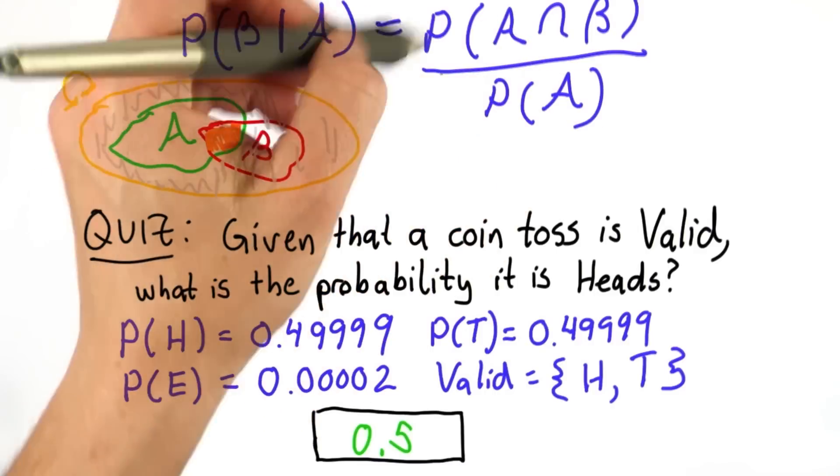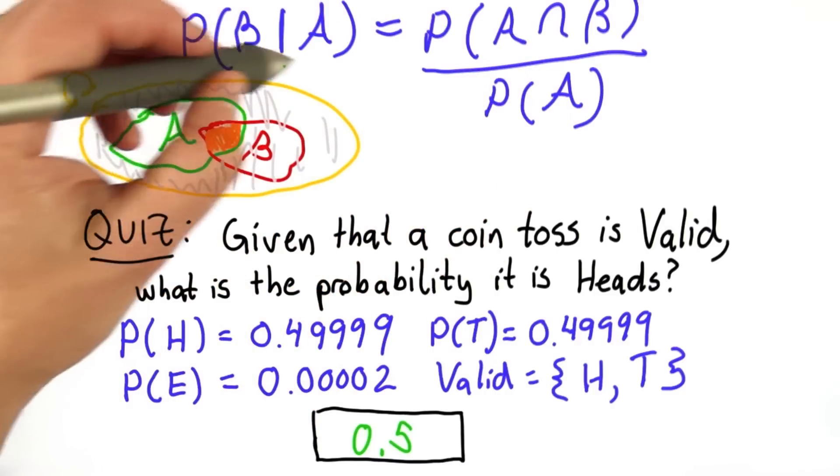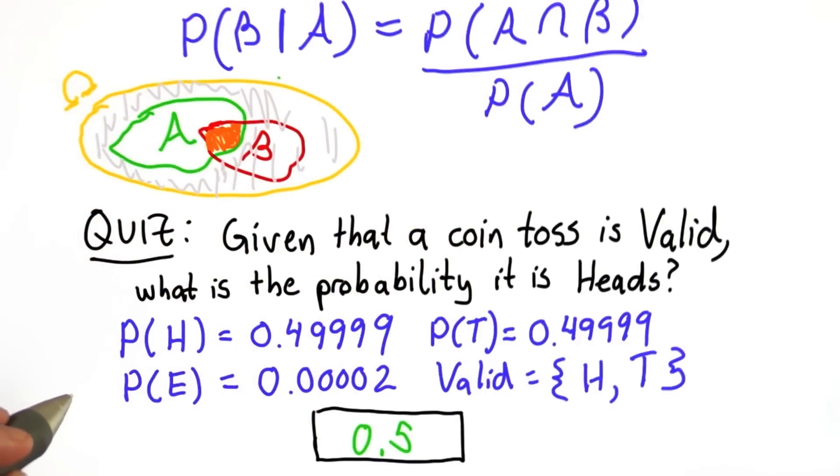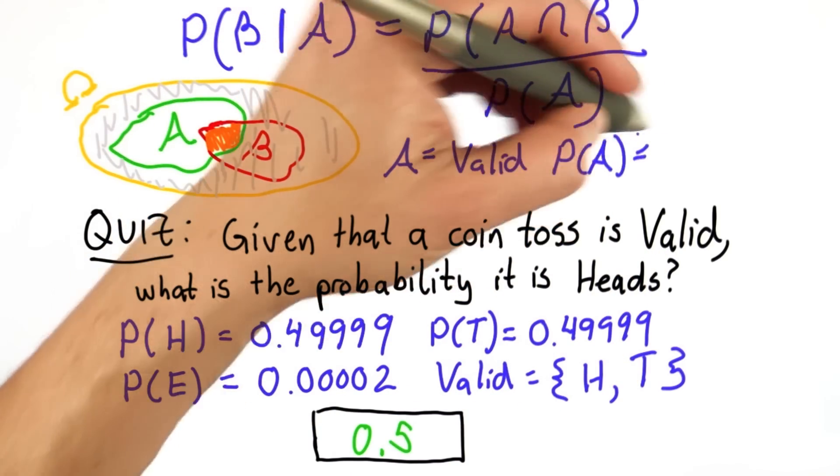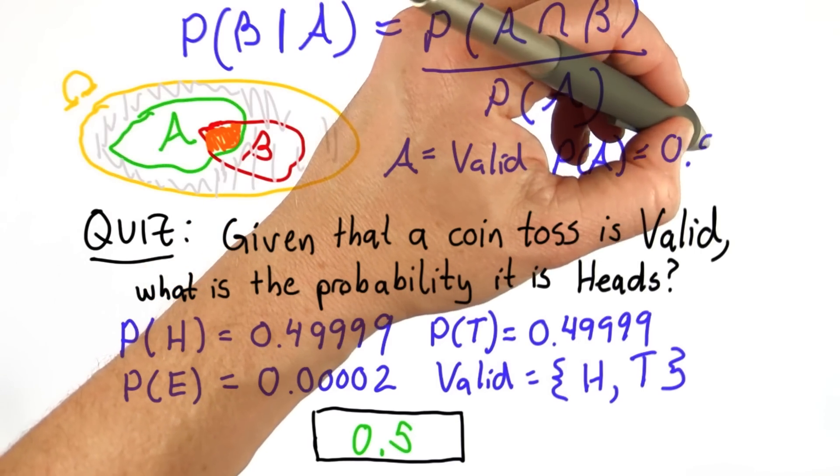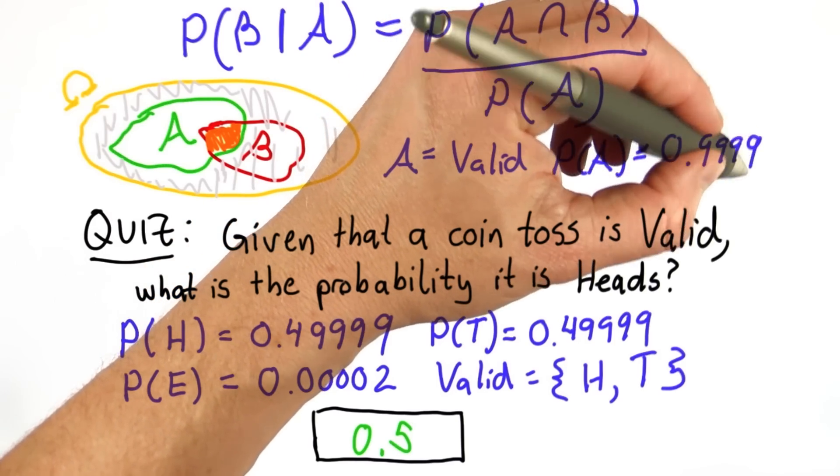We can compute this using the formula for conditional probability. In this case, what A is is the probability the coin toss is valid. A is valid, and we know that the probability of A is equal to 0.99998.